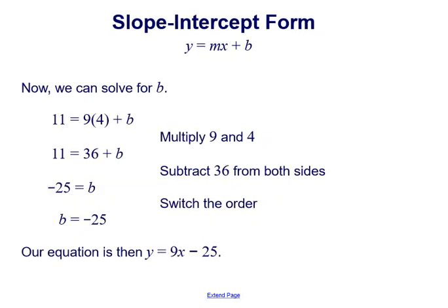We can then take that equation and solve for b. We first multiply 9 times 4 to get 36, then subtract 36 from both sides to get negative 25 equals b. Using the slope of 9 and the newly found y-intercept of negative 25, our equation y equals mx plus b becomes y equals 9x minus 25.